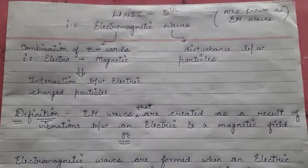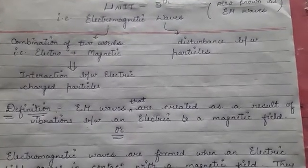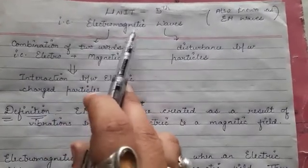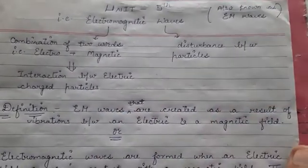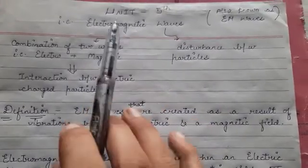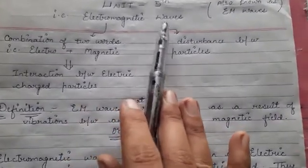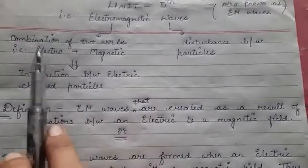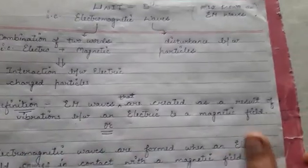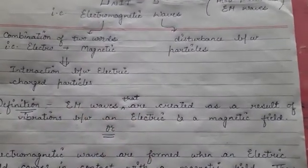Good morning students. We are going to start the fifth unit. The name of the unit is electromagnetic waves, or EM waves. The word electromagnetic is a combination of two words: electro and magnetic. Electro means electric charges, and magnetic refers to magnetic properties.